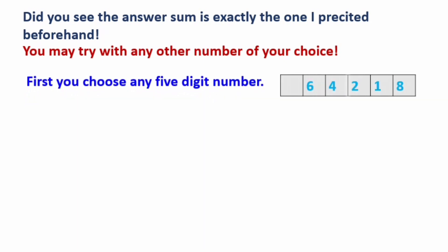First, you choose any 5 digit number. For example, 64,218. I will predict the answer. So the predicted answer is...